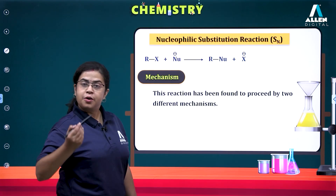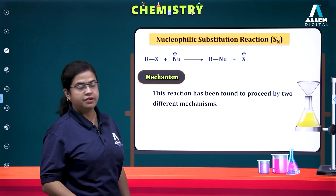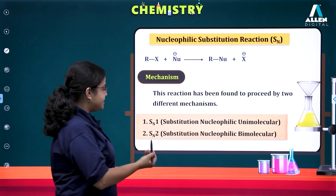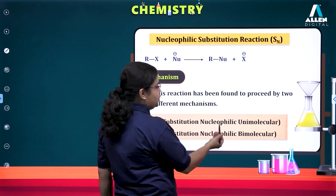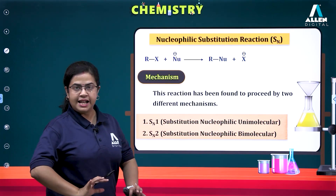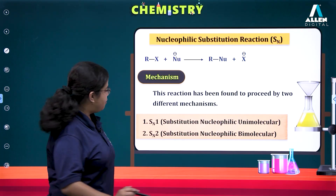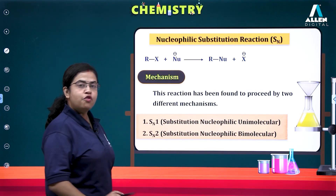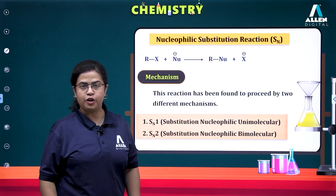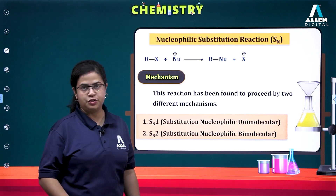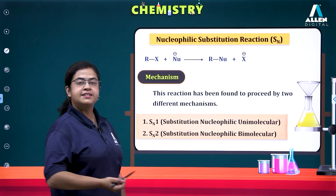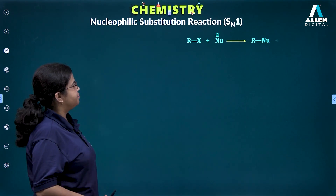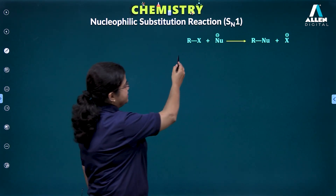The broader classification of the nucleophilic substitution mechanism is SN1 and SN2. SN1 stands for Substitution Nucleophilic Unimolecular reaction, whereas SN2 stands for Substitution Nucleophilic Bimolecular reaction. We will begin our discussion now with the SN1 reaction.